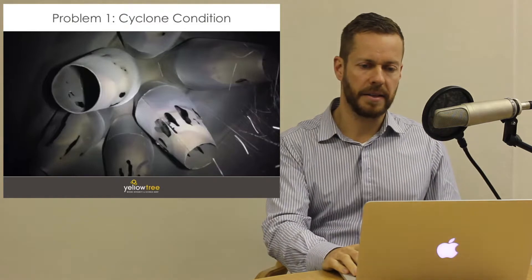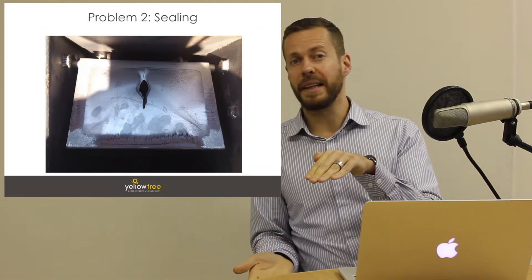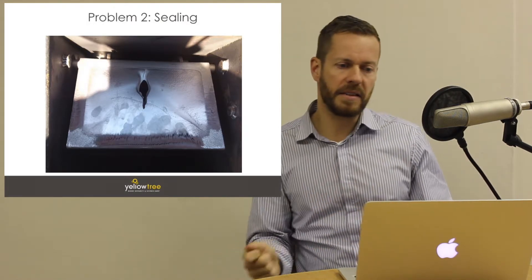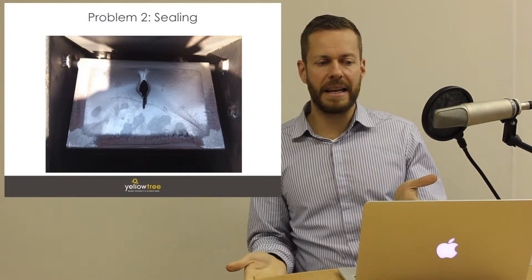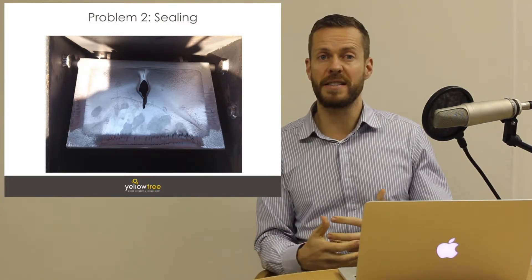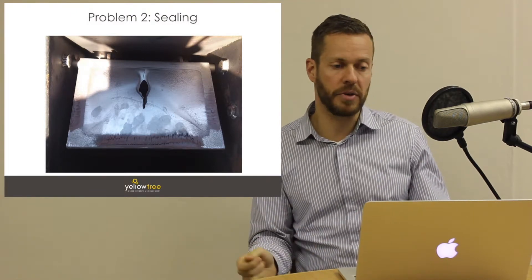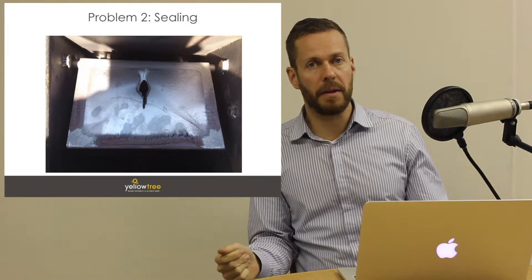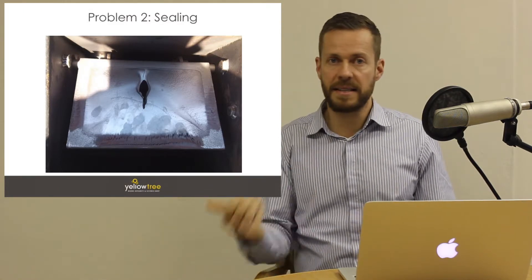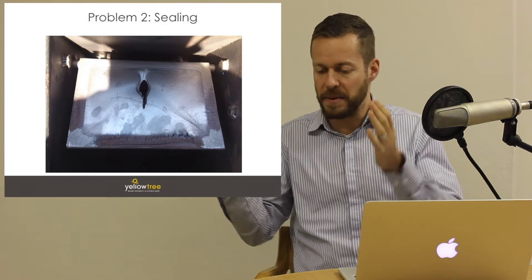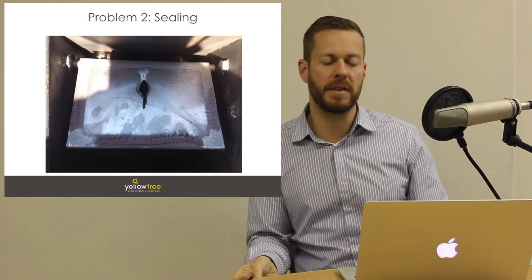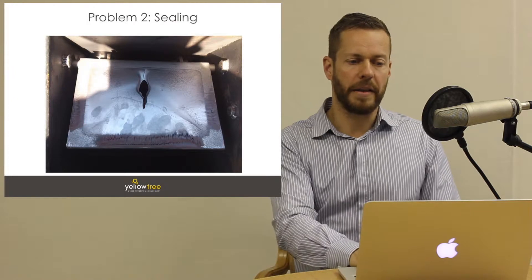The second problem with multicyclones is that the two sealing flaps at the bottom are also subject to abrasive particulate matter that wears through them. This photograph shows a hole in one of those sealing flaps — not caused by any mechanical force, but by erosion, worn away like sand dunes. As soon as there's a hole in the sealing flap at the bottom, air will be sucked in because the ID fan is downstream.